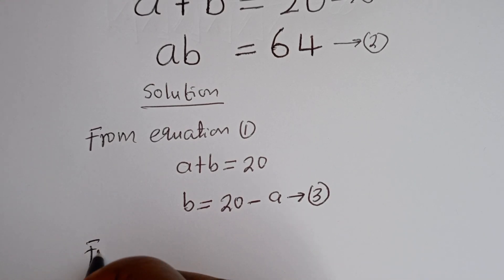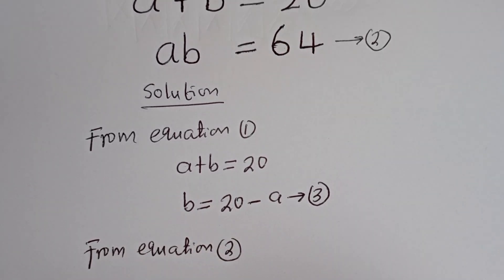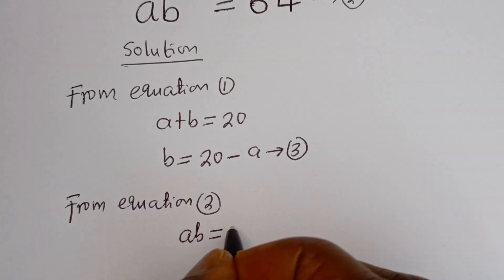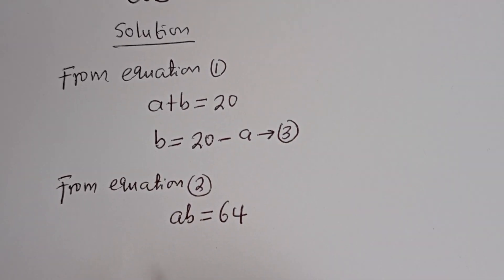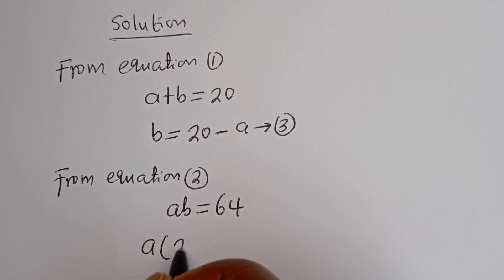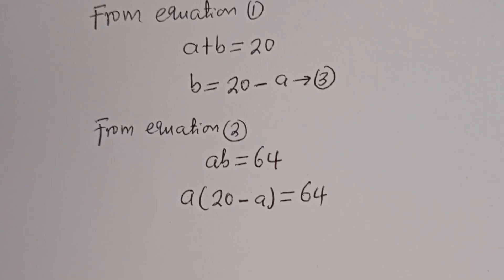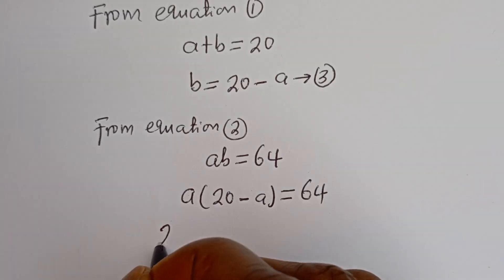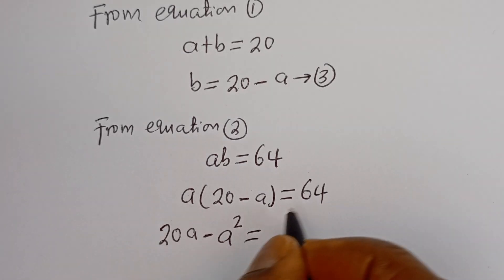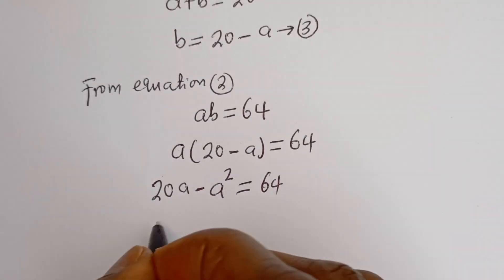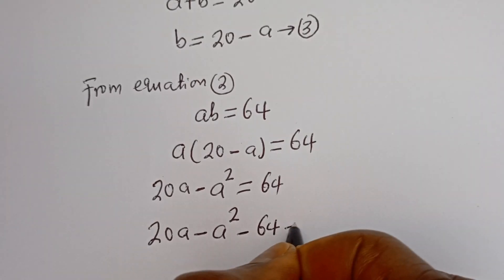From equation 2, ab is equal to 64. Now we know the value of b, so let's substitute for b. We have a times (20 minus a) is equal to 64. Let's open the bracket: a multiplied by 20 is 20a, minus a multiplied by a, which is a squared, is equal to 64. Then this is 20a minus a squared minus 64 is equal to 0.